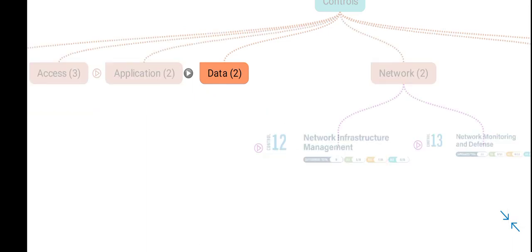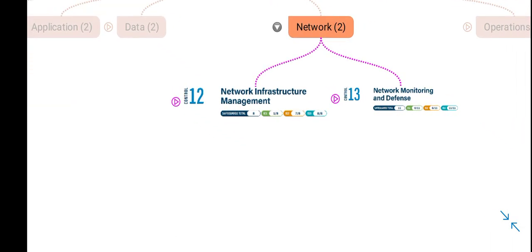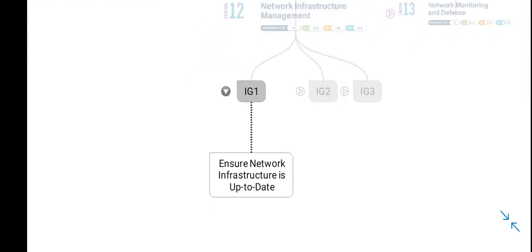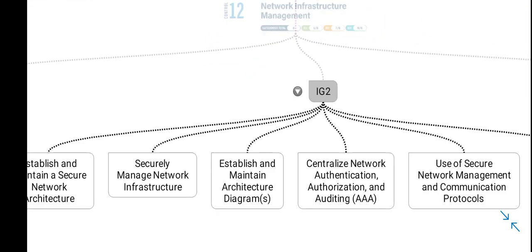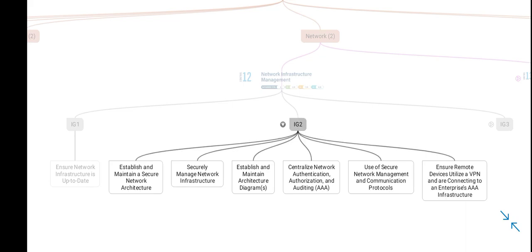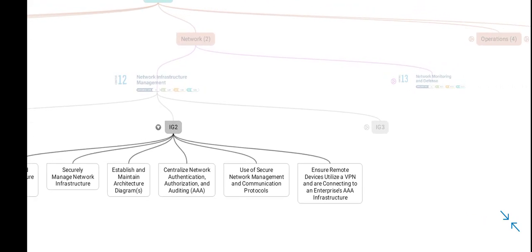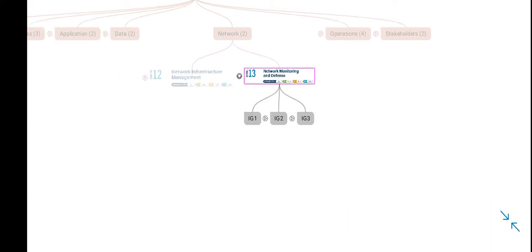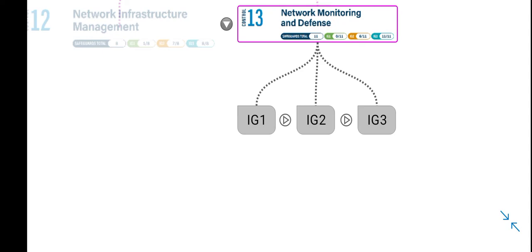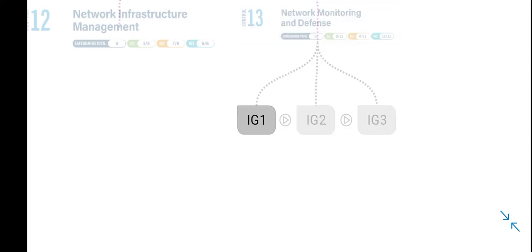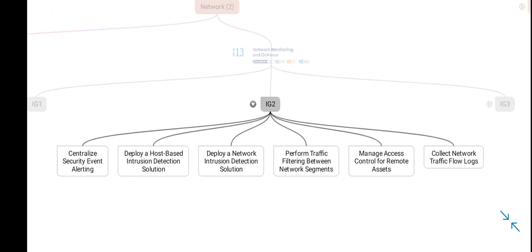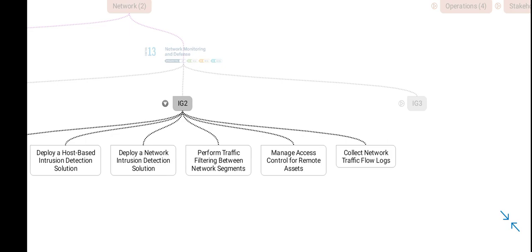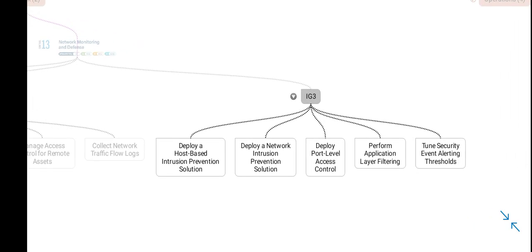Coming over to network — network infrastructure management and network defensive controls: for IG1 there are 6 controls, and in IG3 there is 1 additional control. For smaller organizations there is nothing in IG1 for some controls, and for larger organizations all previous controls plus 5 additional controls.